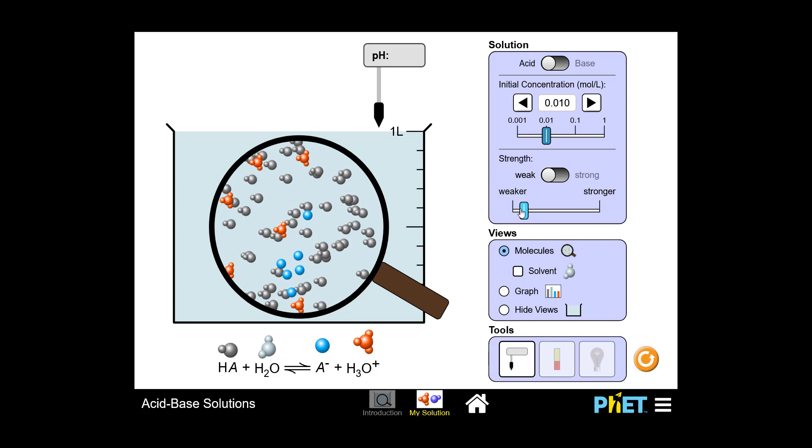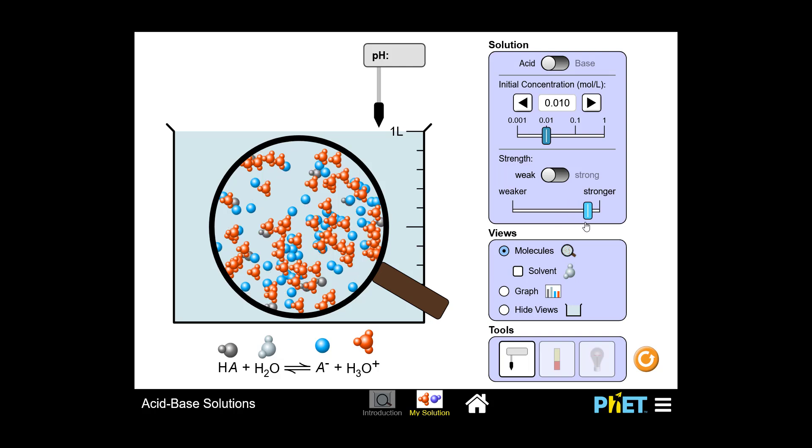As you're moving this slider along on the right from weaker to stronger, you're changing the relative strength of an acid solution. You may be asking yourself, how do we measure the strength of an acid?